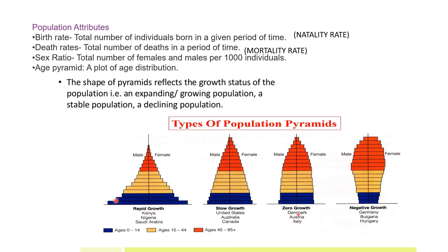In the first (expanding) graph, the 0–14 age group is largest and the old age group is smallest. In the second (stable/static) graph, the children's age group is not expanding as rapidly. In the declining graph, the children's age group is smallest, the middle age group is larger, and the old age group is largest in comparison.